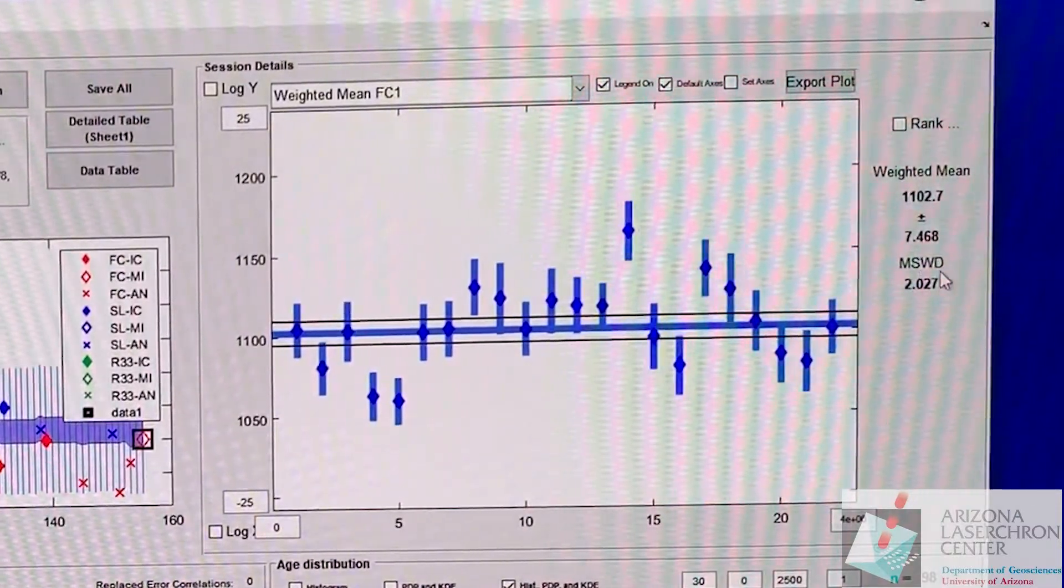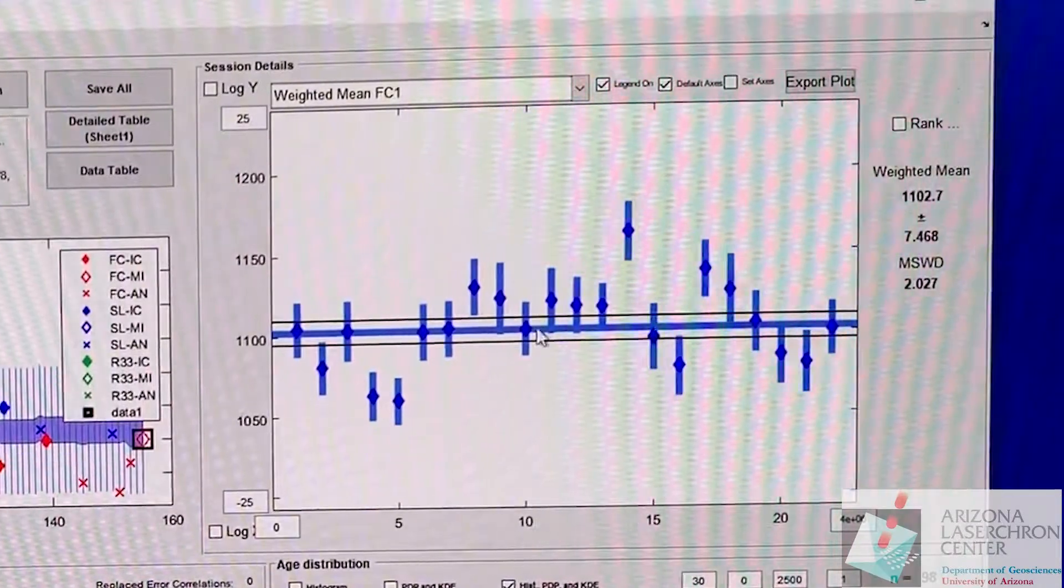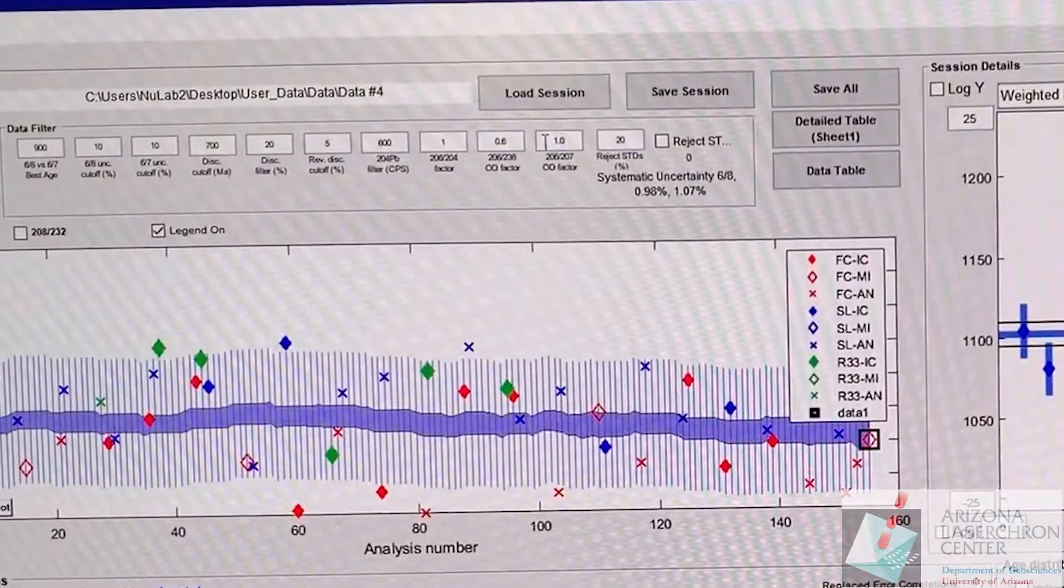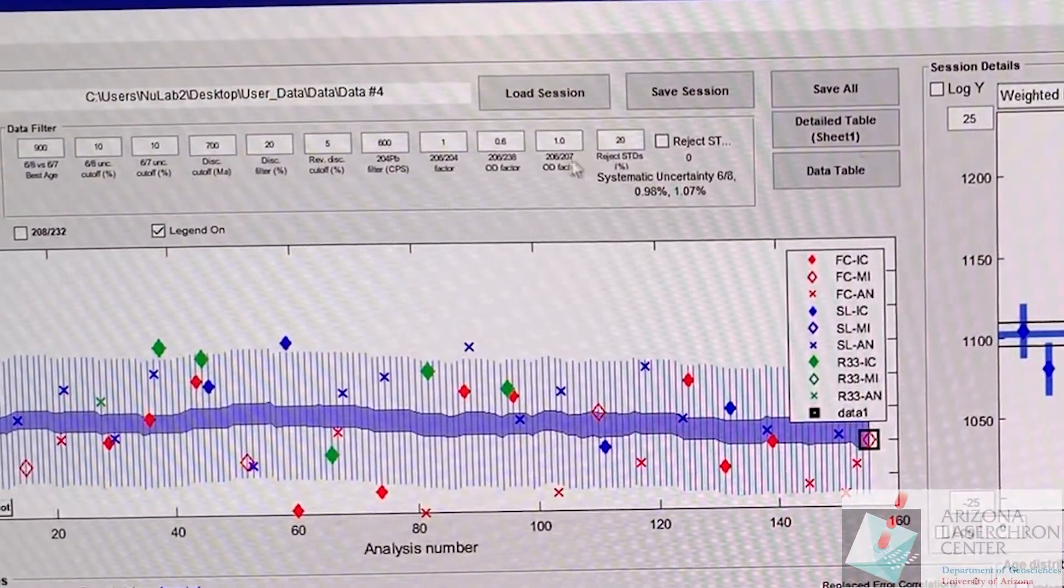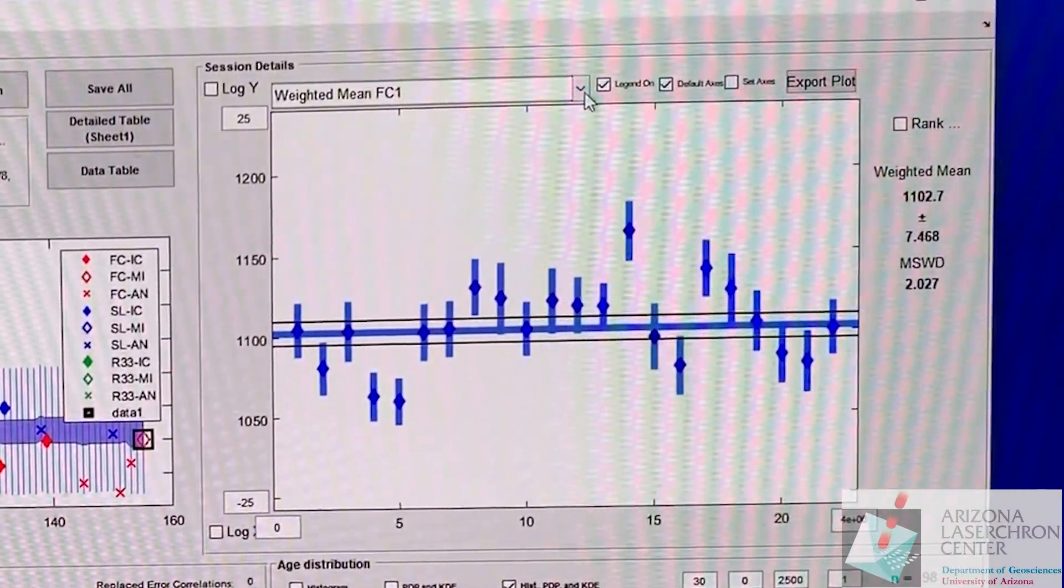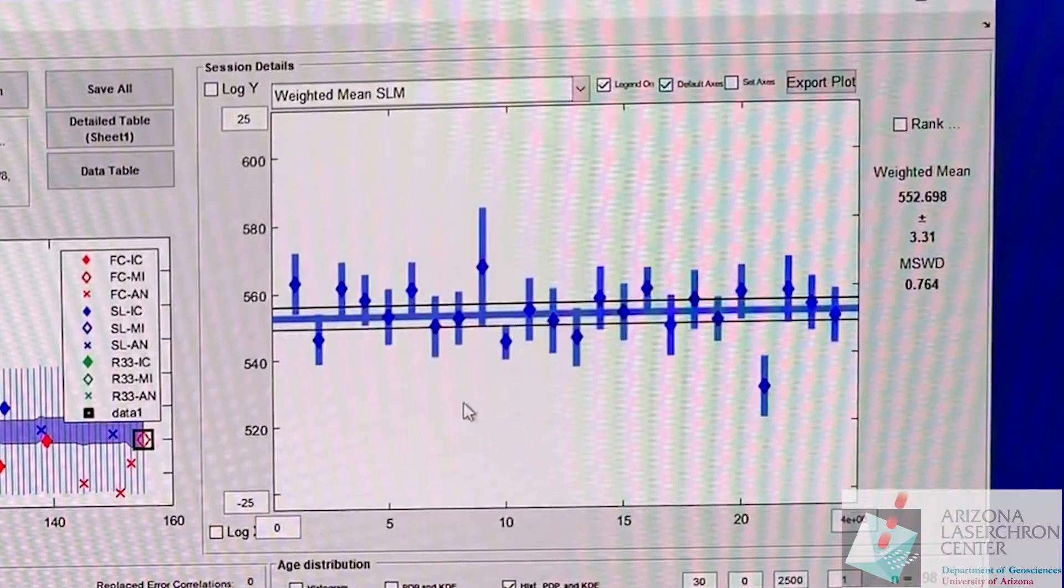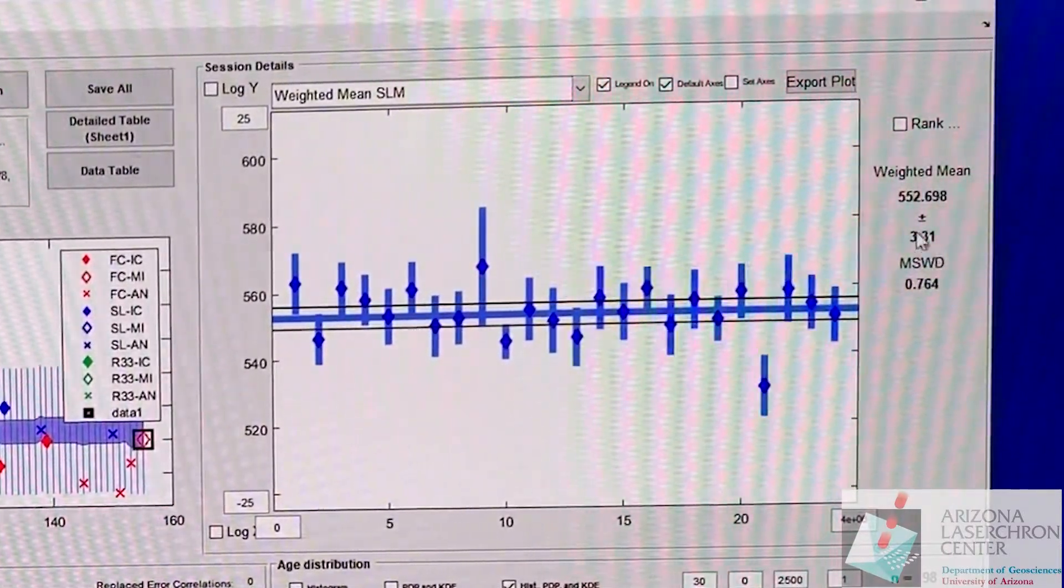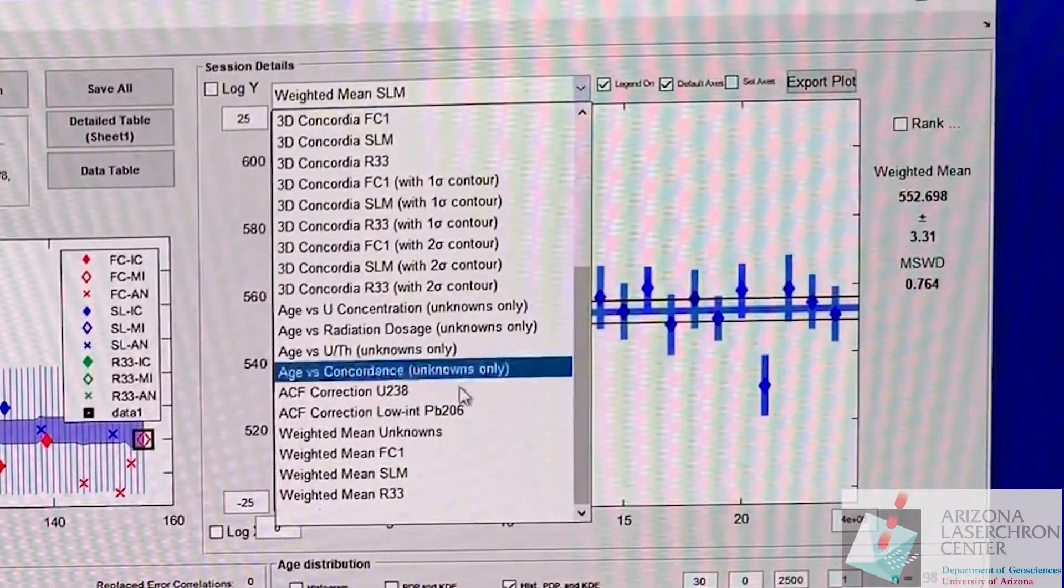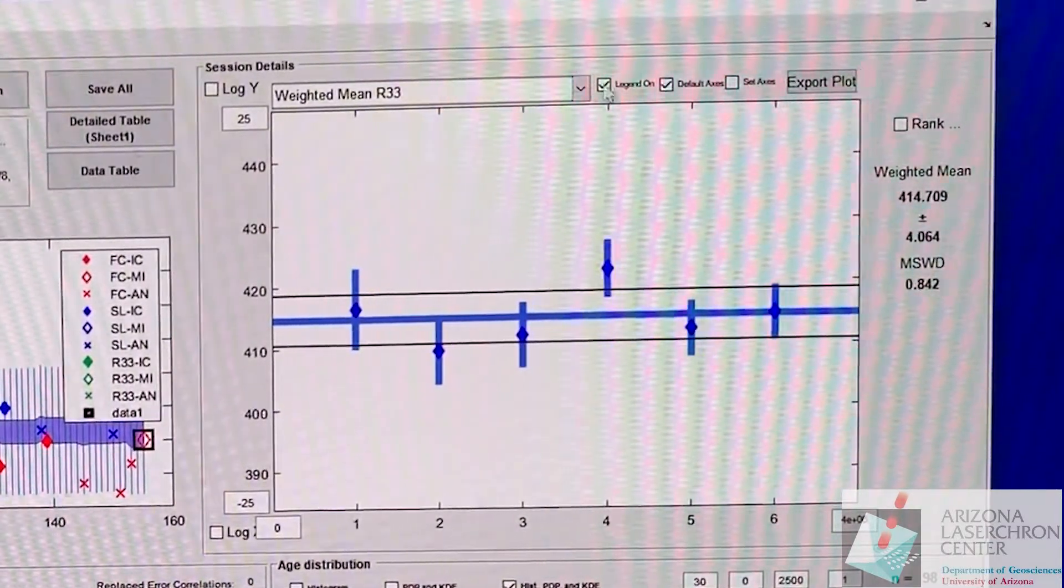And the MSWD, we're shooting for an MSWD of one. That means your uncertainties appropriately represent the amount of dispersion you have. You can add back uncertainty here by playing around with the over dispersion factor. You look at SL here we have an MSWD that's really close to one and we're pretty close to the known age. Same with R33.